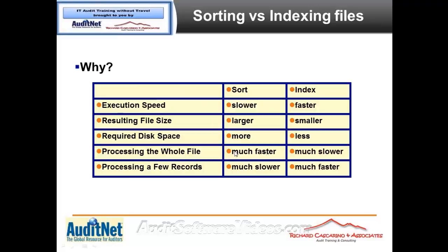But if I'm going to read the whole file, I only have to read all of those records once. If that 300 megabyte file is made up of 4 million records, I have 4 million reads to do on the sorted file. But I have 8 million reads to do on the indexed file — read the index, read the file, read the index, read the file.